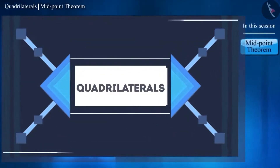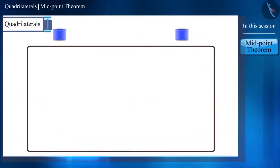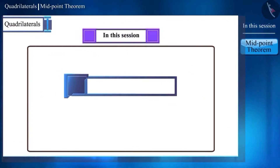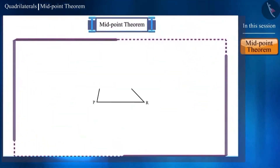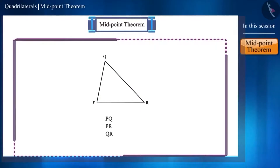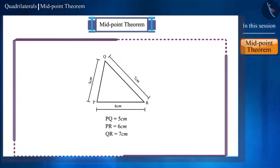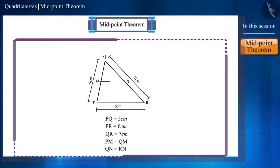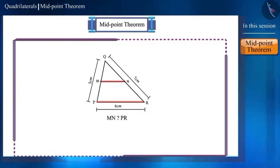Hello friends, welcome to this video on quadrilaterals. So far we studied some properties of triangles and quadrilaterals. Today we will study another property of triangles — the midpoint theorem. Draw a triangle PQR whose sides PQ, PR and QR are 5 cm, 6 cm and 7 cm respectively. Suppose the midpoint of side PQ is M and the midpoint of QR is N, so PM equals QM and QN equals RN. Draw line segment MN by joining points M and N. Can you tell any relation between MN and side PR?